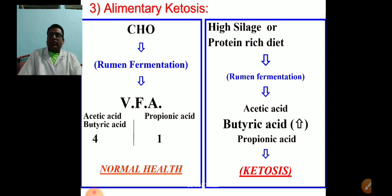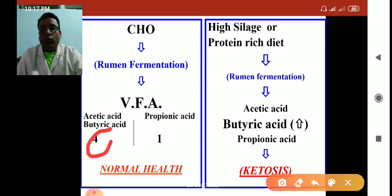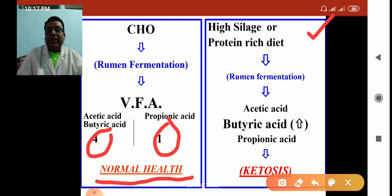Third is alimentary ketosis, the simplest form. When carbohydrates are consumed, rumen fermentation produces volatile fatty acids: acetic acid, butyric acid, and propionic acid. Acetic and butyric acids are ketogenic, while propionic acid is anti-ketogenic and serves as a precursor of glucose. When the normal ratio is maintained at 4:1, normal health exists. However, when feeding high silage or protein-rich diets increases butyric acid concentration, ketosis develops.